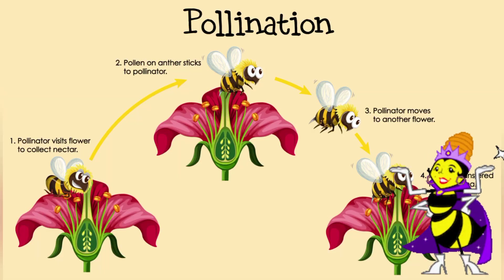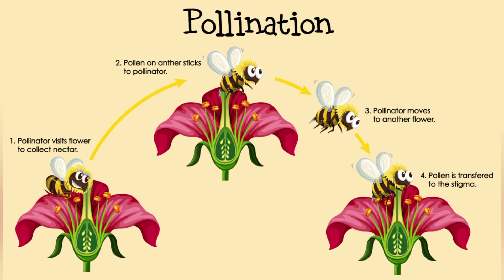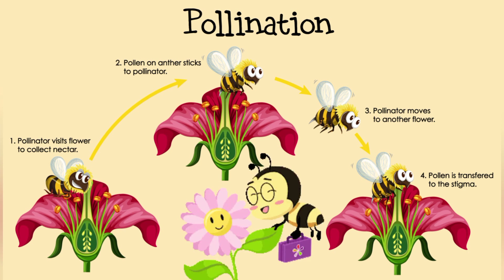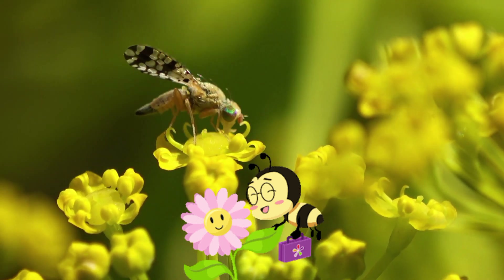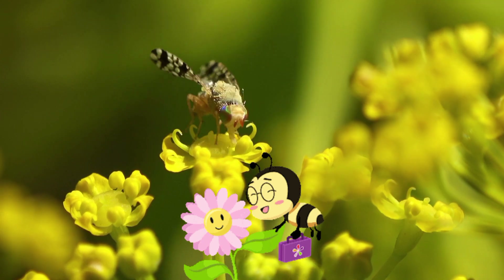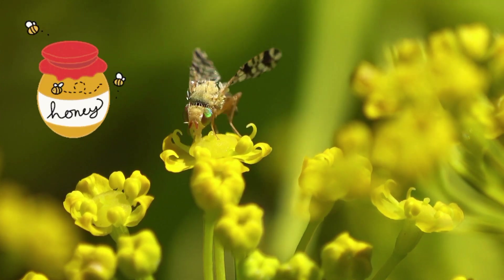Pollination: Honeybees are prolific pollinators, transferring pollen from one flower to another as they collect nectar for honey production. This pollination is crucial for the reproduction of many fruits, vegetables, and nuts.